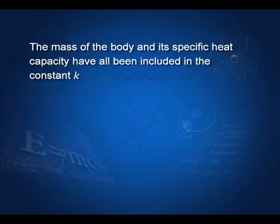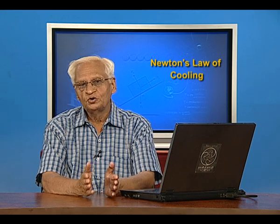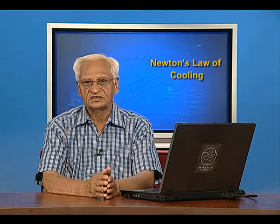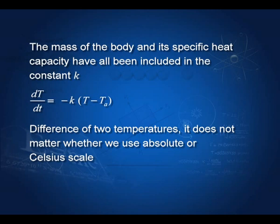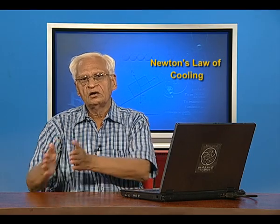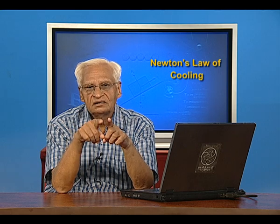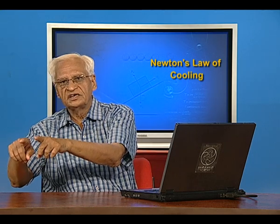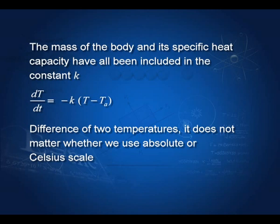Remember that the law holds only for small differences of temperatures — small enough for the binomial expansion to be valid, meaning delta T must be small compared with the ambient temperature T_a. The mass of the body and its specific heat capacity have all been included in the constant k. The law is written using absolute temperatures, but since this is a temperature difference, it does not matter whether we use the absolute scale or the Celsius scale, as the magnitude of each degree absolute is the same as each degree Celsius.